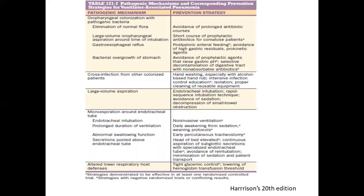There are various preventive strategies to prevent a patient on mechanical ventilator support from developing pneumonia. To stop oropharyngeal colonization with pathogenic bacteria, we can stop the use of prolonged antibiotic courses to preserve normal flora. We can use short courses of prophylactic antibiotics, go for post-pyloric enteral feeding, or use prokinetic agents to avoid high gastric residuals, and avoid prophylactic agents that raise gastric pH to prevent bacterial overgrowth in the stomach.